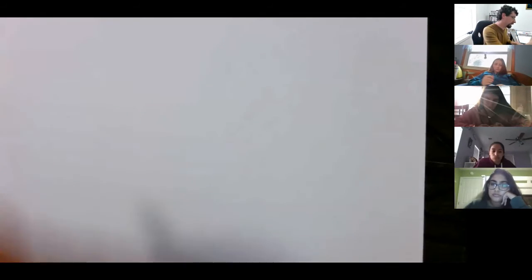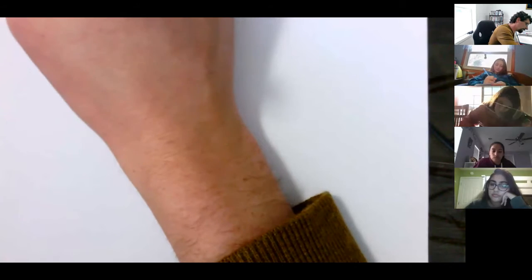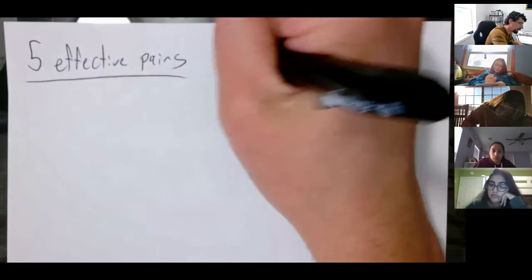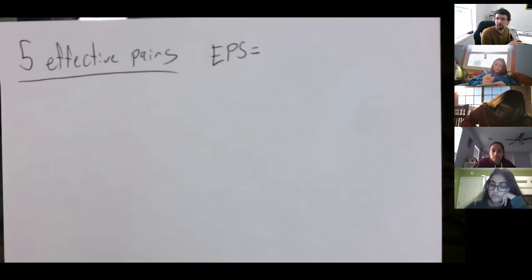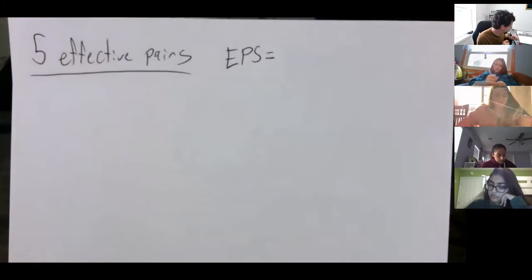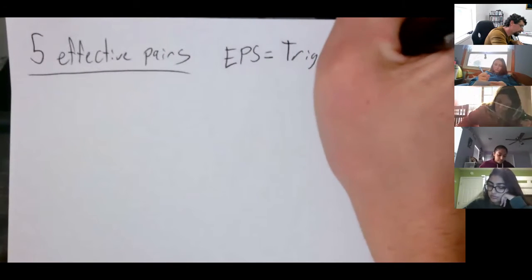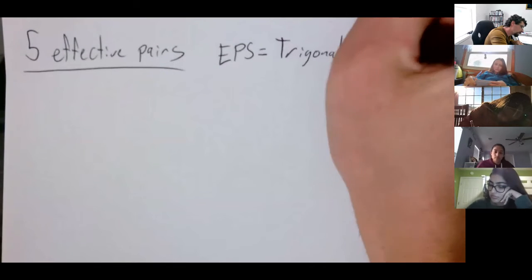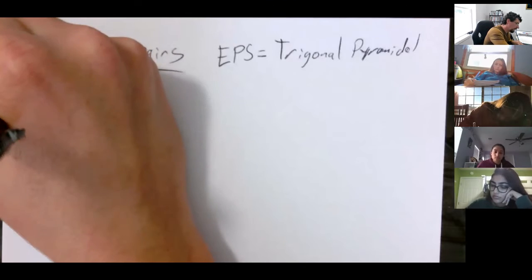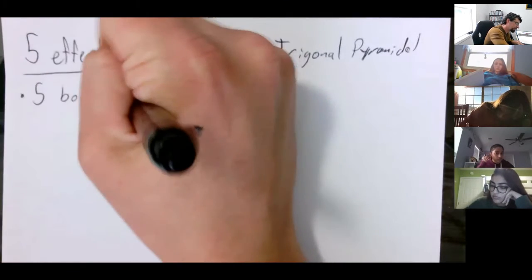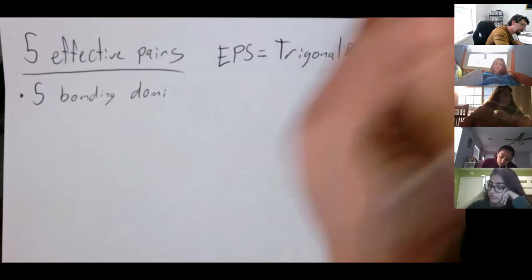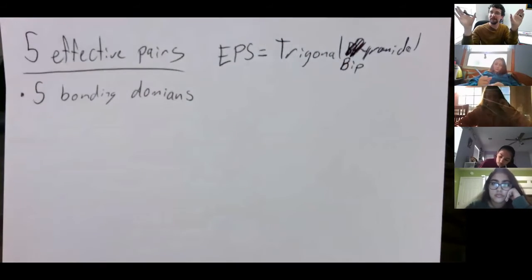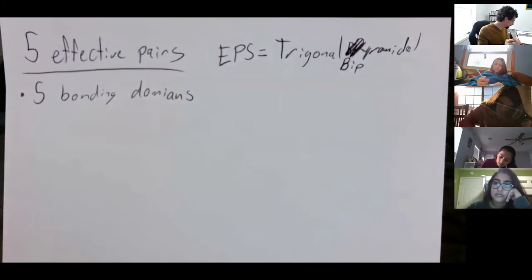We're done with four effective pairs. Let's move on to five effective pairs. What's the electron pair shape for five effective pairs? Trigonal bipyramidal — yep, trigonal bipyramidal. The bipyramidal comes from basically slapping two trigonal pyramidal structures together.